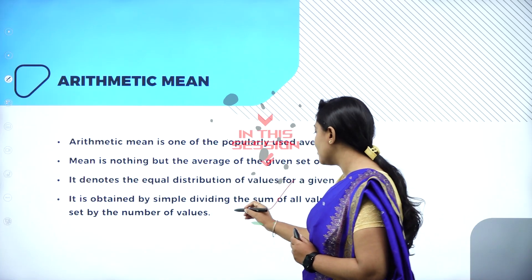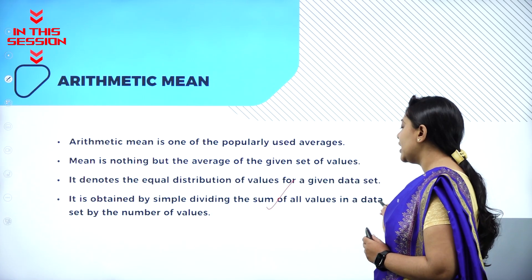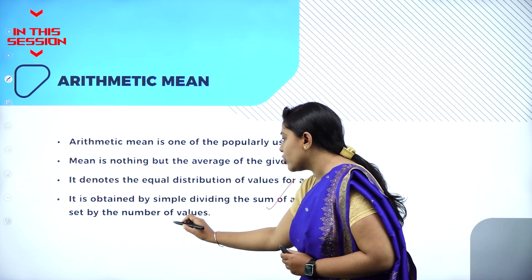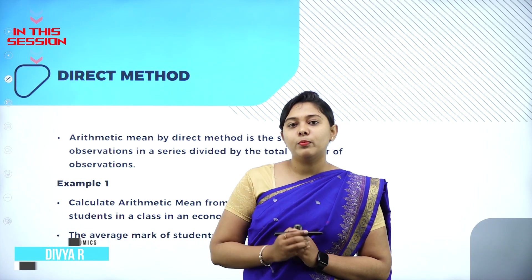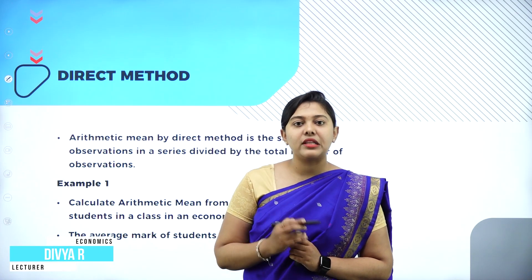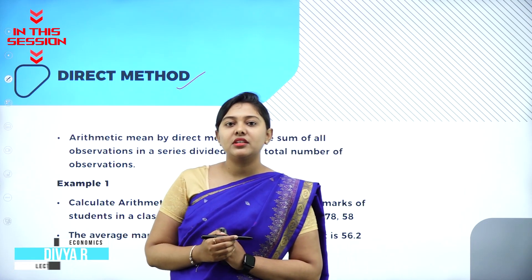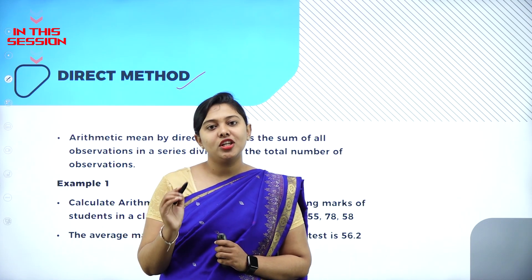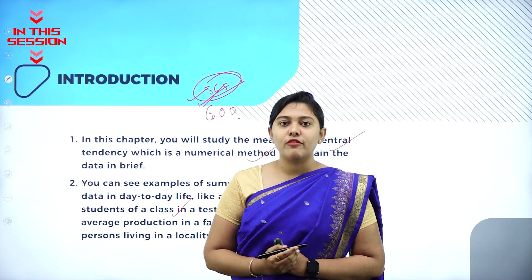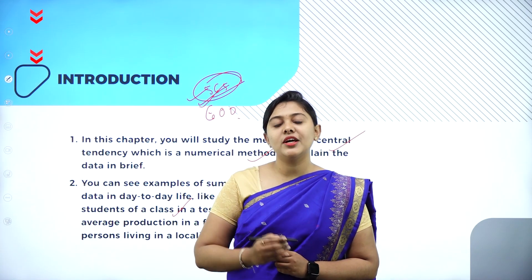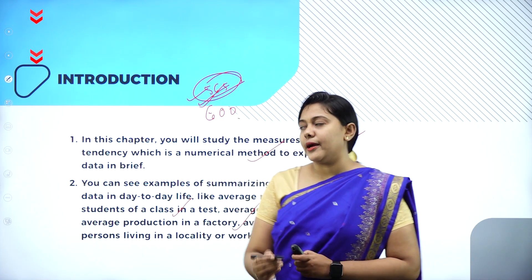What is mean? It simply means dividing the sum of all values in a data by the number of values. Calculation of mean under ungrouped data can be done under three methods: direct method, assumed mean method, and step deviation method. Wherever you go, there will be a usage of an average, so this is a popular method in statistics to summarize the data.